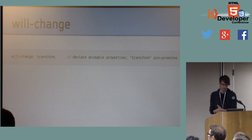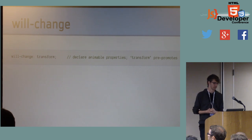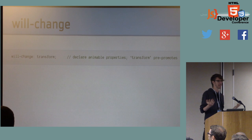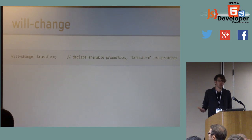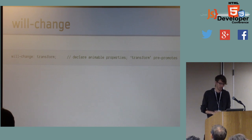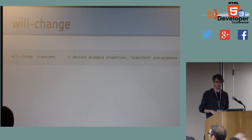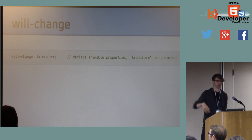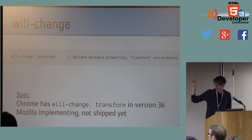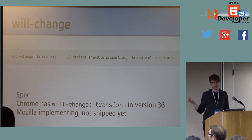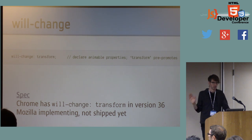Will-change: one instance is saying will-change: transform. You can stick any animatable property in the value field of will-change, and it's essentially a hint to the engine saying 'this is what I'm going to change — maybe you want to do some work ahead of time to be ready.' So will-change: transform would pre-promote the element in question to its own layer because it's going to get transformed. This is a link to the spec, and Chrome implemented this very recently — about a month ago. Mozilla is currently implementing it but hasn't shipped it yet.